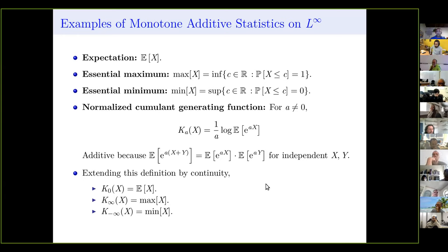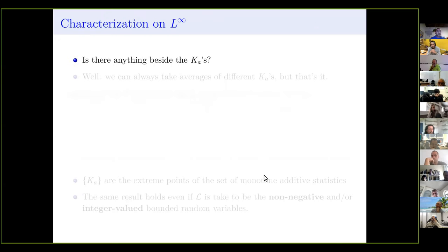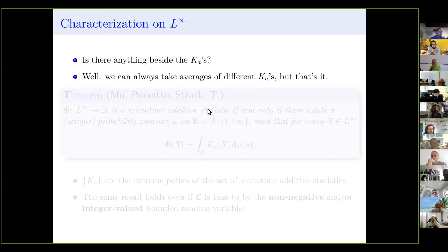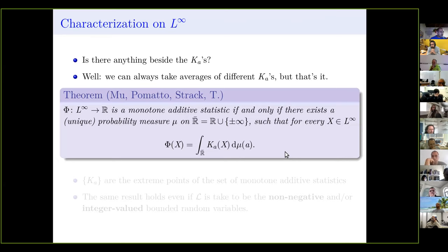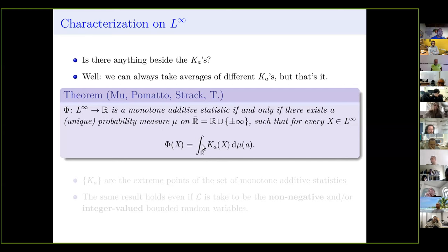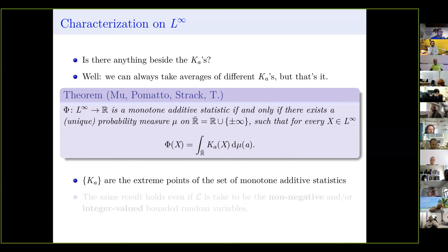So if we allow the parameter a to take values in the extended reals including ±∞, these k_a's include all the examples seen so far. You can also take averages or integrals of different k_a's. The main theorem is that this is everything: if phi is a monotone additive statistic on L-infinity, then there exists a probability measure mu on the extended reals such that phi(x) is the average of k_a(x) with respect to mu. In other words, the k_a's are the extreme points of the set of monotone additive statistics.